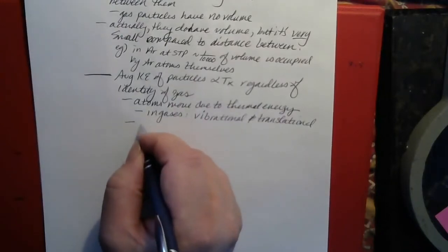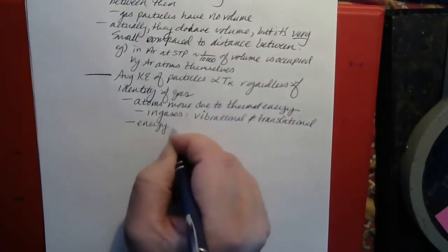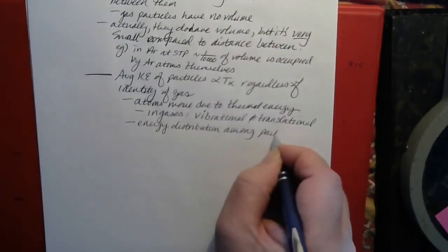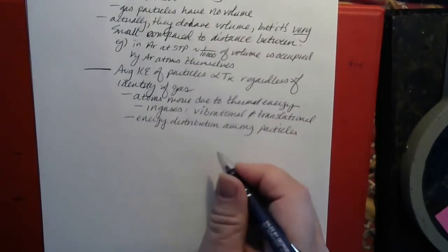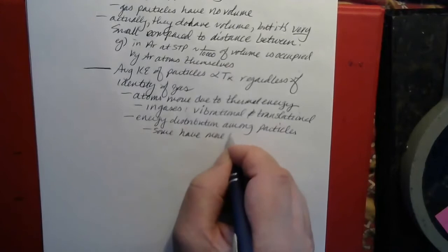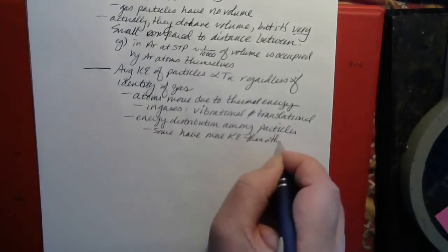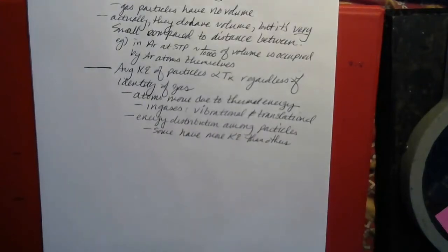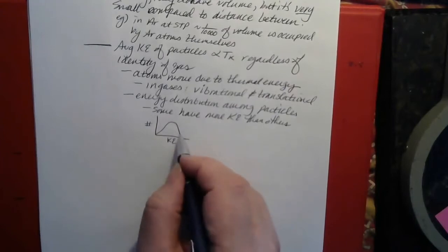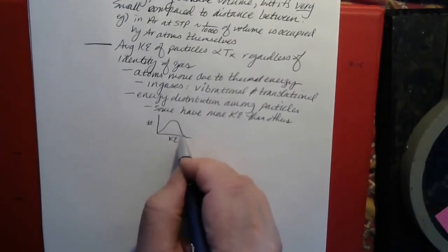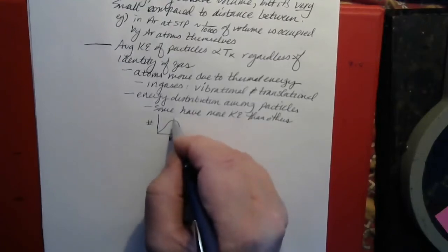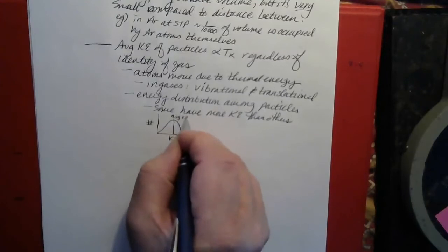There will be an energy distribution for the particles in any given sample, and not all of them will have the same kinetic energy. But most of them will be clustered right around the middle with something around the average kinetic energy. You usually get a bell-shaped curve — a small amount of particles with very high kinetic energy, a small amount with very low kinetic energy, and the bulk somewhere in the middle.